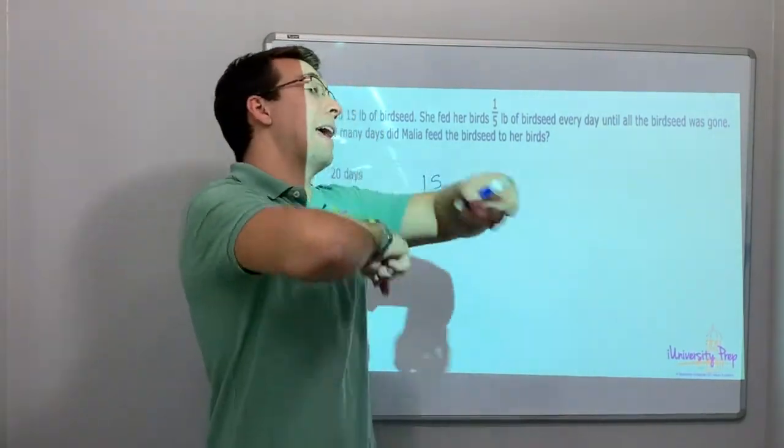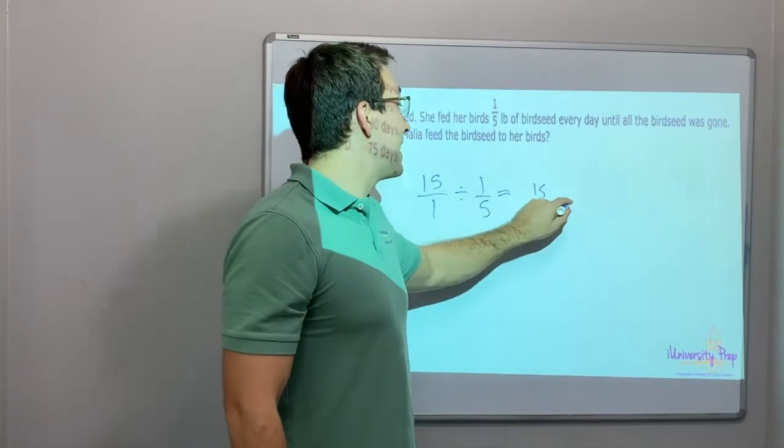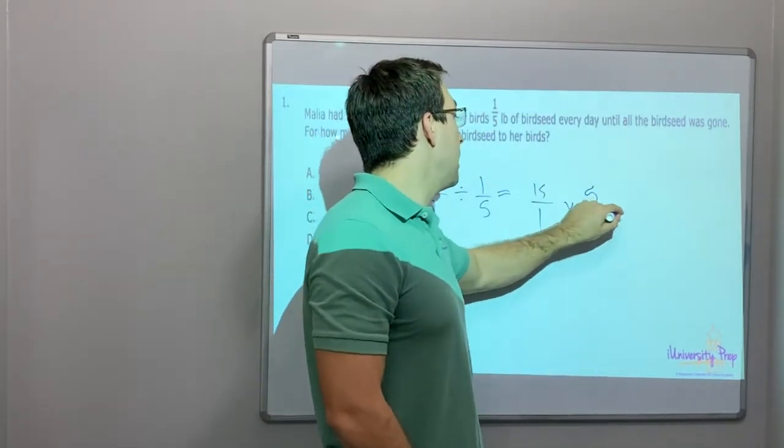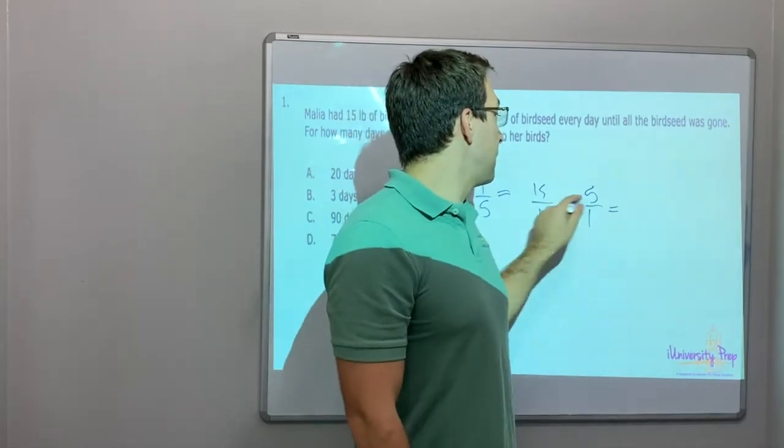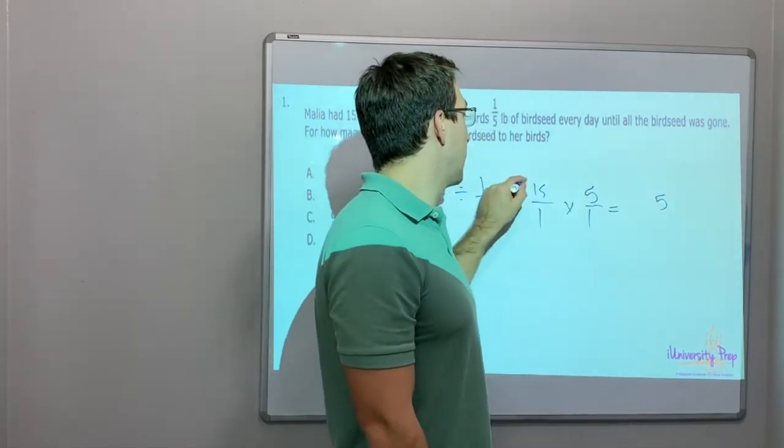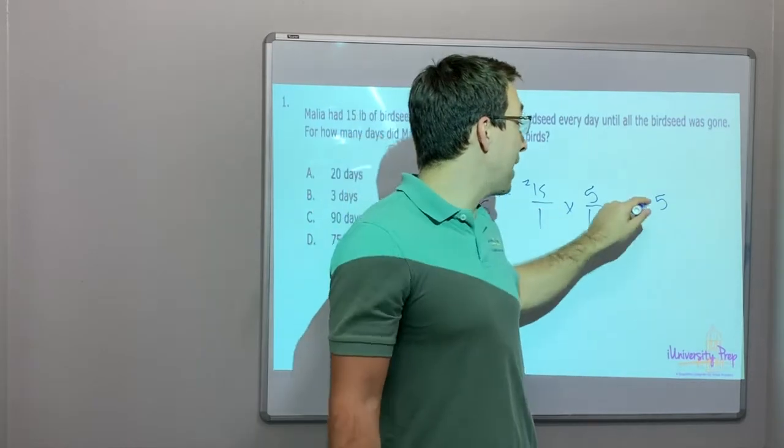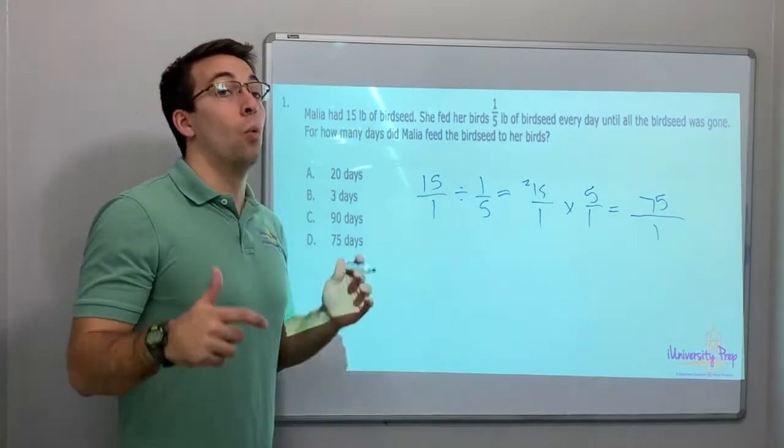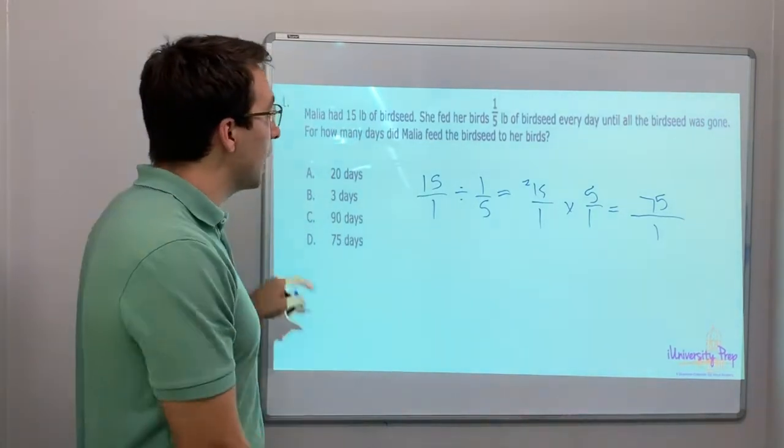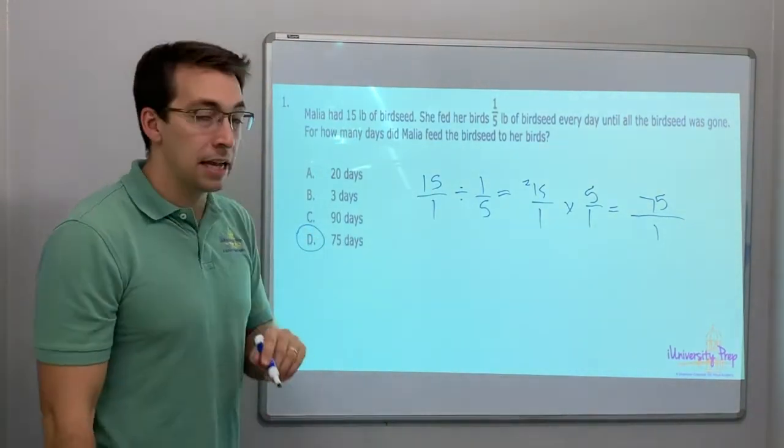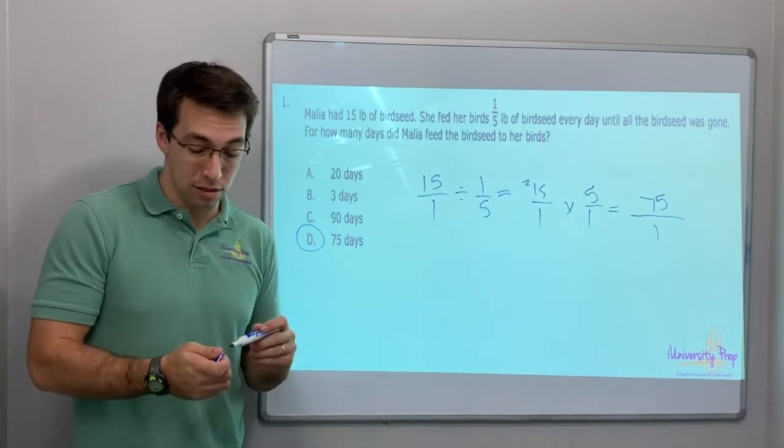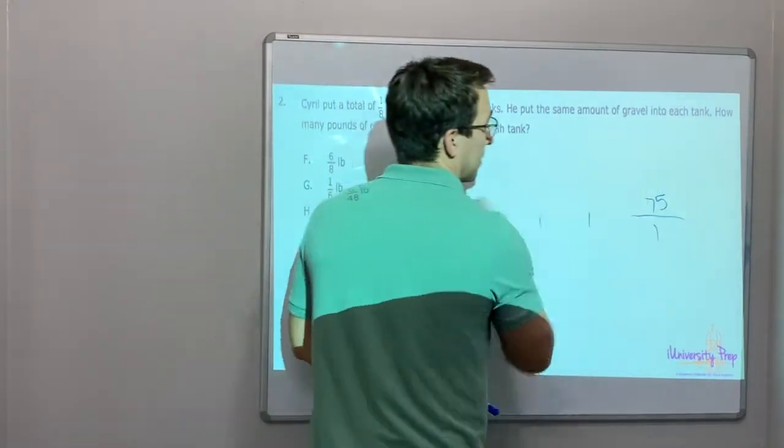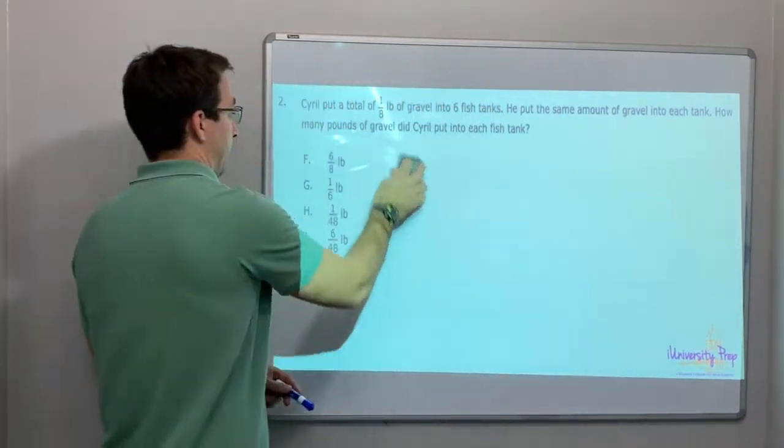So, we multiply and flip. 15 over one times multiply and flip. Five over one equals 15 times, five times five is 25, carry the two. Five times one is five, plus two is seven. 75 over one. Whoa. How many days does she last? 75 days. 15 pounds of birdseed will last you a pretty good amount of time. That's like two and a half months.